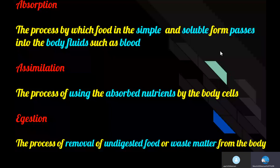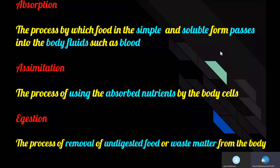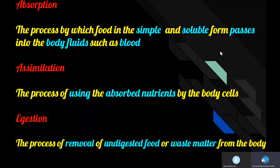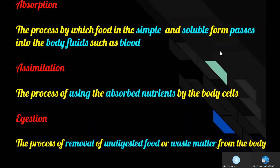Assimilation is the process of using the absorbed nutrients by the body cells for producing energy and for growth of the body. Ejection, the last process, is the process of removal of undigested food or waste material from the body.